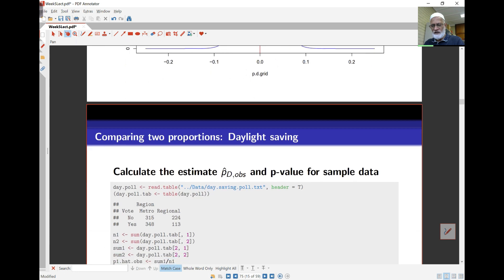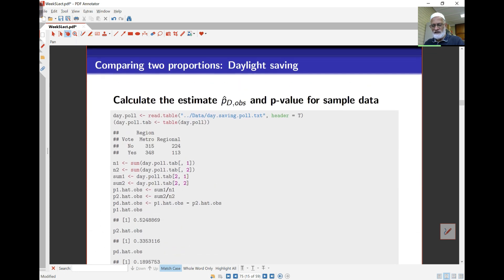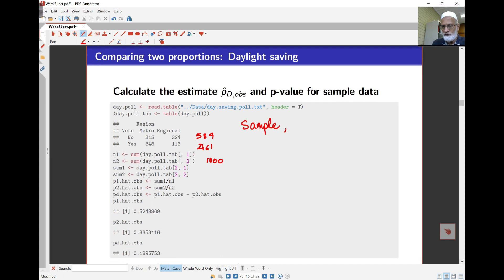My interest of course was in hypothesis testing. So I'm going to do some calculations. Let's look at this example of the daylight saving. I've got a sample of size 1,000 from metro and 1,000 from regional. In metro I've got 539 no votes and 461 yes votes. In regional I've got 348 no votes.